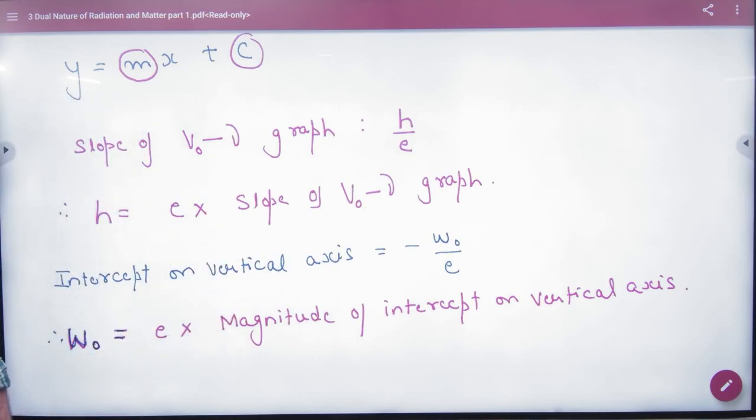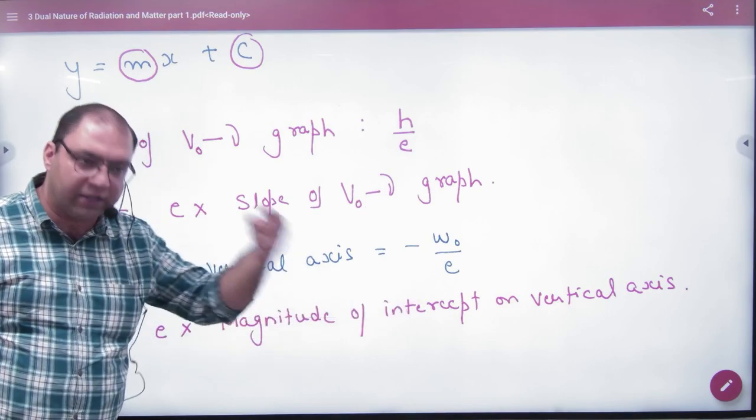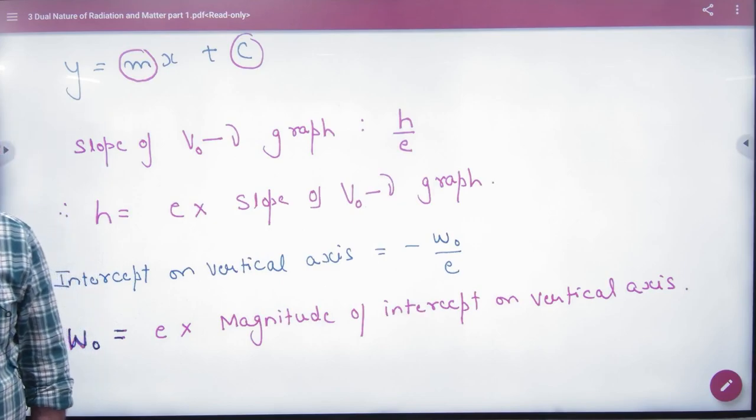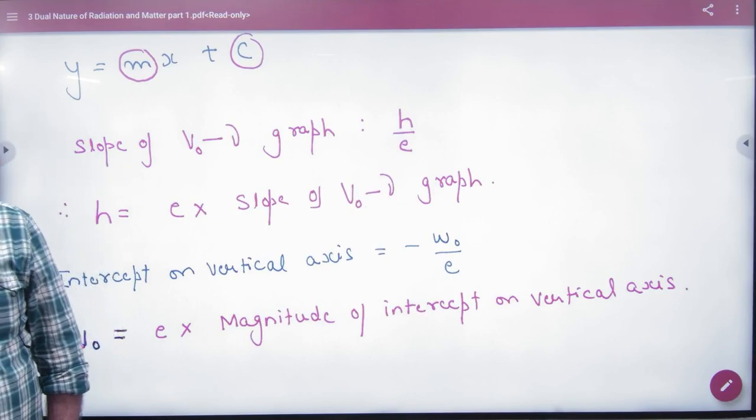So work function is e times magnitude of intercept on vertical axis. So you have to write how to find Planck's constant and work function in this way.